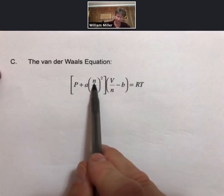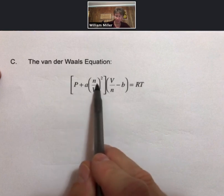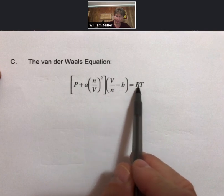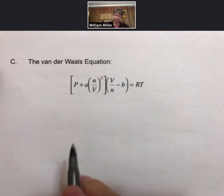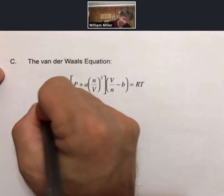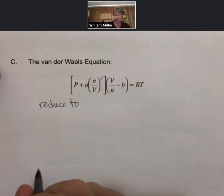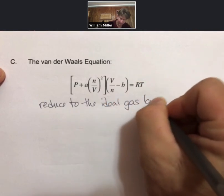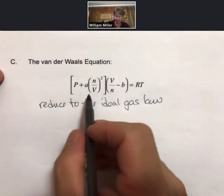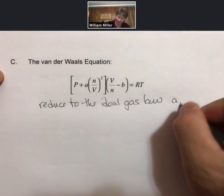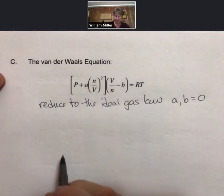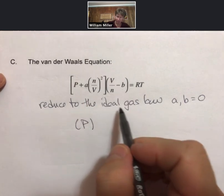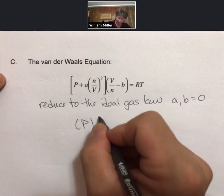or sorry, pressure plus some correction, times volume minus some correction equals RT. What we can do is actually reduce this when these two constants A and B both equal zero. When A equals zero, this term drops out and we get just P. When B equals zero, we get V over N.